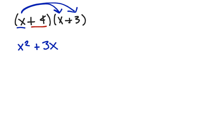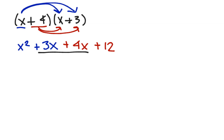Now distributing the positive 4: 4 times x is plus 4x, and 4 times positive 3 is positive 12. Once again we are looking for like terms to combine. We have positive 3x and positive 4x, which gives a positive 7x when combined. The final answer is x squared plus 7x plus 12.